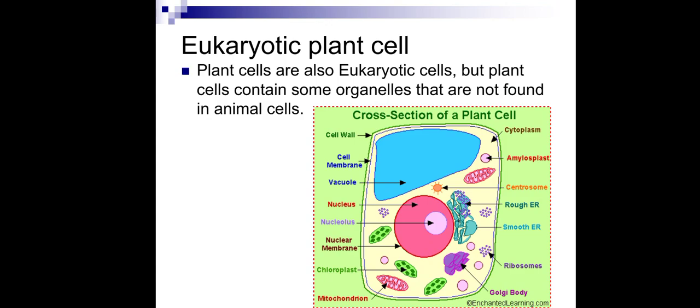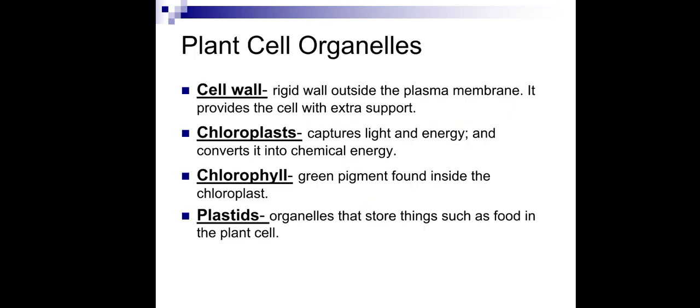The plant cell diagram also shows rough endoplasmic reticulum, smooth endoplasmic reticulum, and Golgi apparatus — all the organelles, because it is a eukaryotic cell. The plant cell also has a cell wall outside the plasma membrane. It is a rigid wall that protects the plant cell and gives extra support, making plant cells hard or woody. Animal cells do not have a cell wall, which is why animal cells are soft.